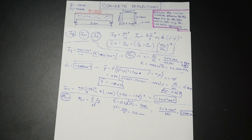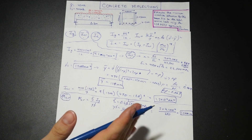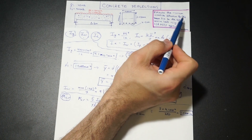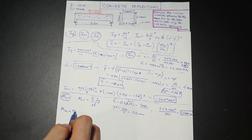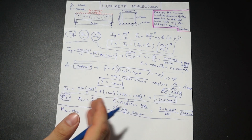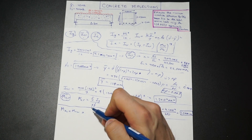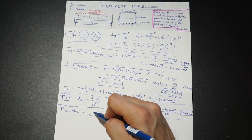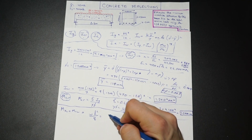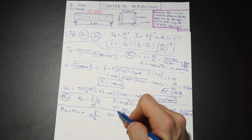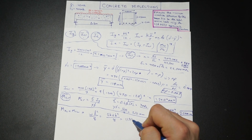Now we need to find our maximum bending moment. The question asks for deflection due to total service loads, so we want MDL plus MLL. For a simply supported beam, the maximum moment is WL squared over 8, which is 26 times 6 squared over 8, giving us a bending moment of 117 kN·m.